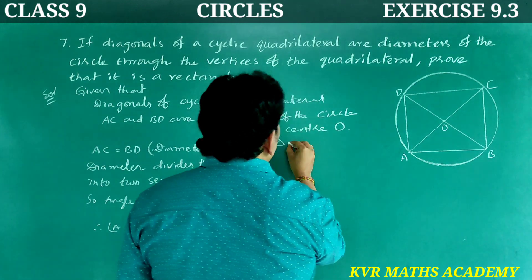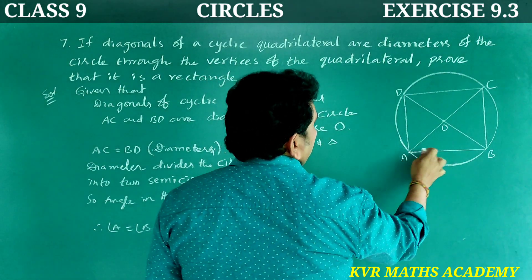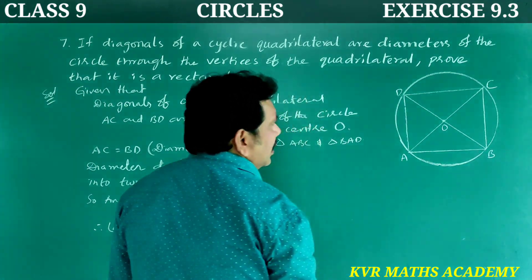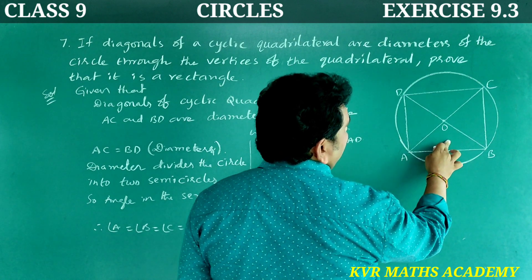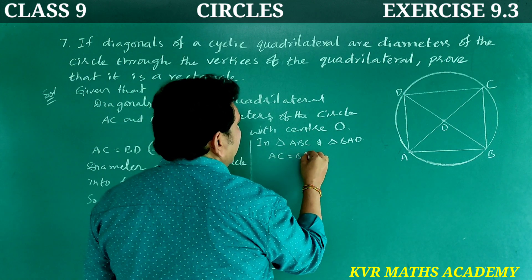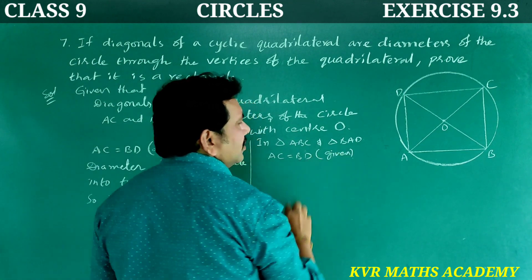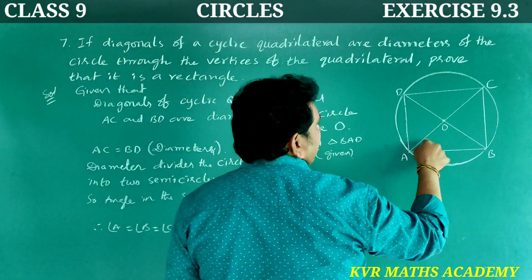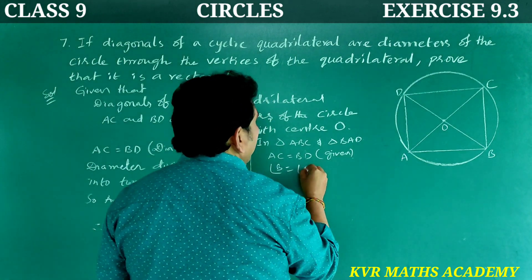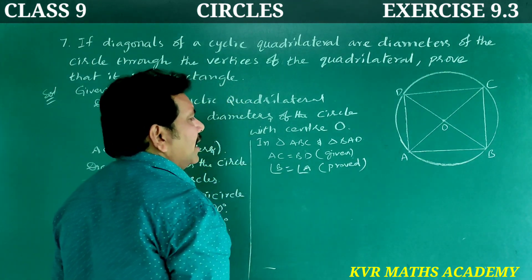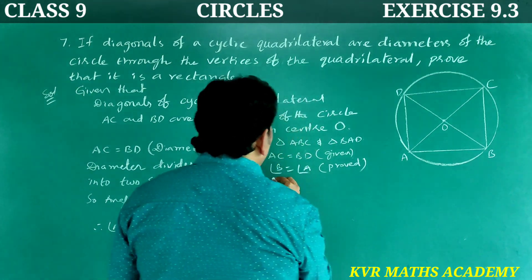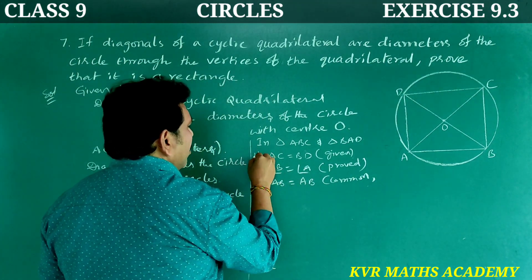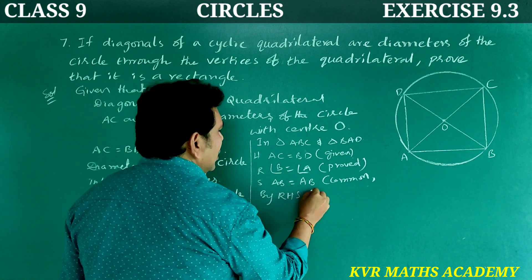In triangle ABC and triangle BAD: AC = BD (diameters, given); angle A = angle B = 90°; AB = AB (common side). So by RHS congruency, triangle ABC is congruent to triangle BAD.